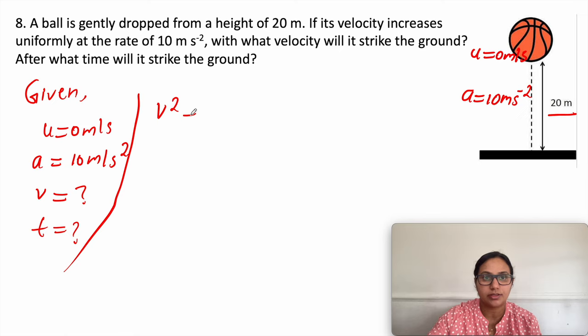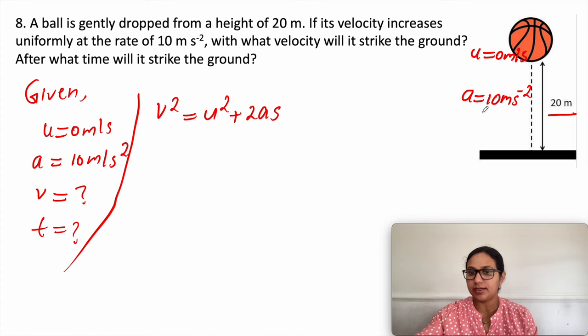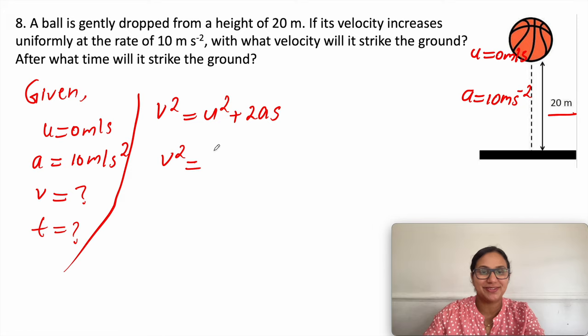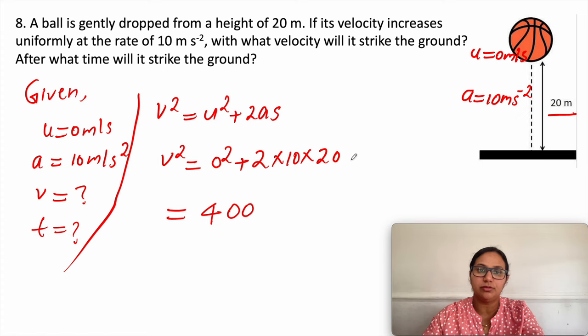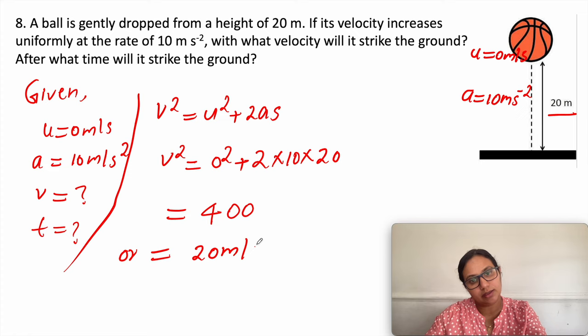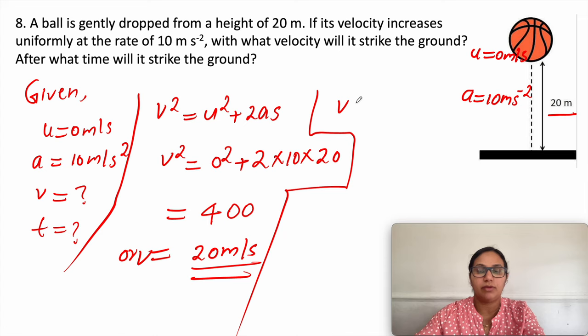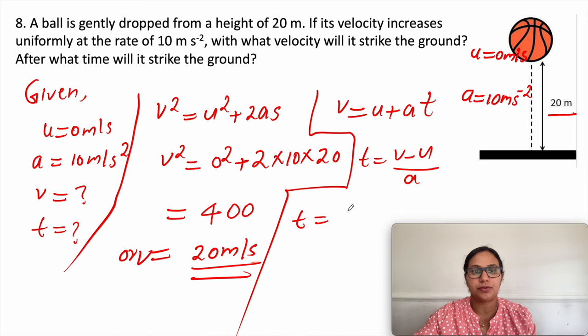Using v² = u² + 2as: v² equals 0 plus 2 times 10 times 20, so v² equals 400, giving v equals 20 meter per second. For time, using v = u + at: t equals (v - u) divided by a equals (20 - 0) divided by 10, giving t equals 2 seconds.